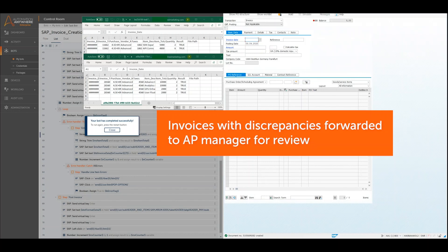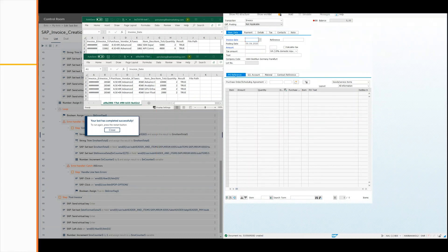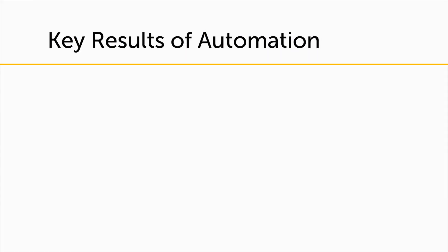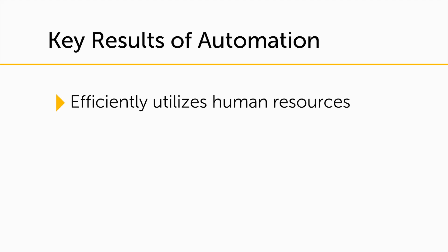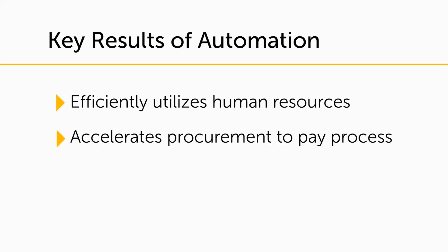If there are discrepancies between the invoice and the purchase order or goods receipt, the invoice is then sent to an accounts payable manager for further review. Automating everyday business processes like the invoice approval process greatly increases the efficiency of human resources and accelerates the procurement process, saving time and money with drastically reduced human errors.